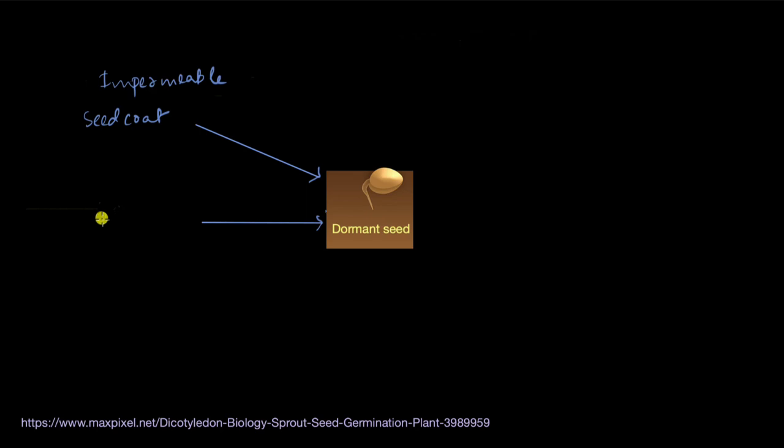Another reason for seed dormancy is hard seed coat. When a seed is germinating, the radicle and the plumule - that is the root and the shoot of the embryo - they need to come out of the seed coat. Now if the seed coat is really hard, that won't happen. The embryo won't be able to come out, so germination won't happen.